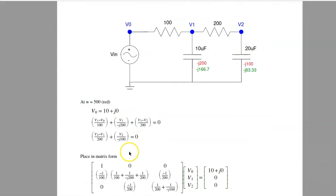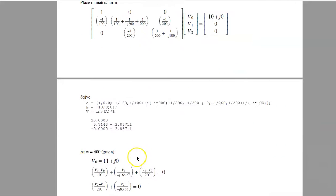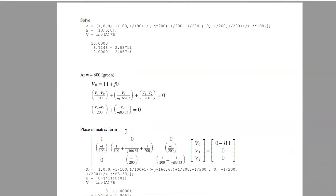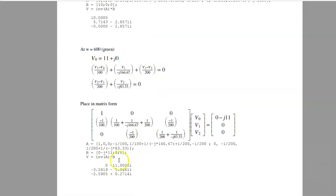Write your node equations, solve, and I get V0, V1, V2, and real part is cosine, minus J is sine. Repeat at 600 radians per second. Now at 600, the capacitors become minus J166 ohms and minus J83 ohms. The input is 11 plus J0, actually 0 minus J11. It's a sine wave.